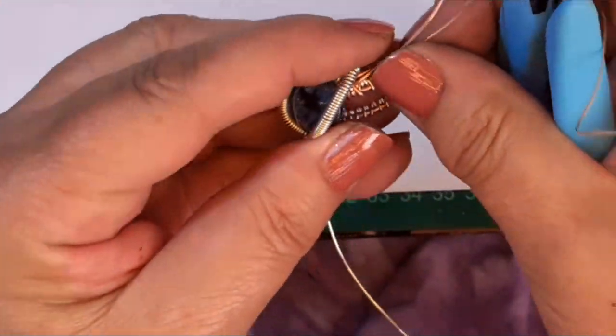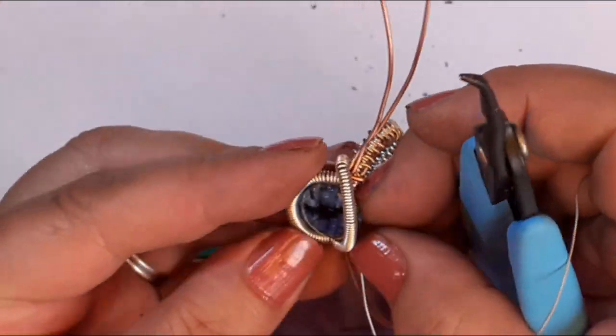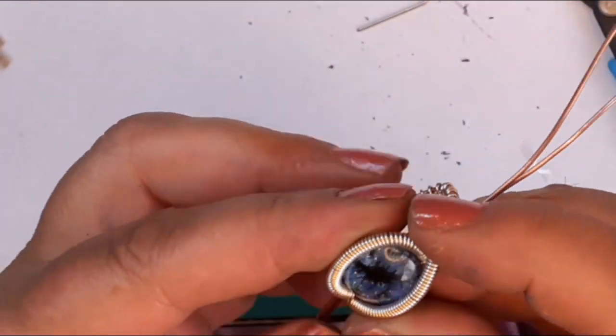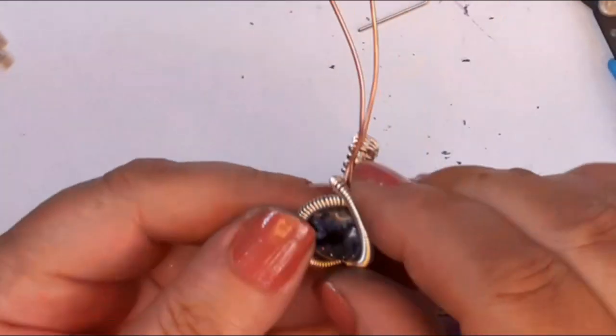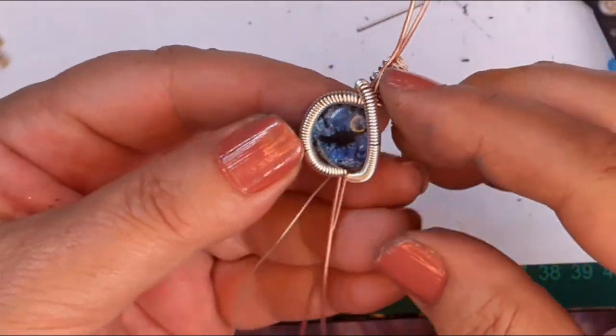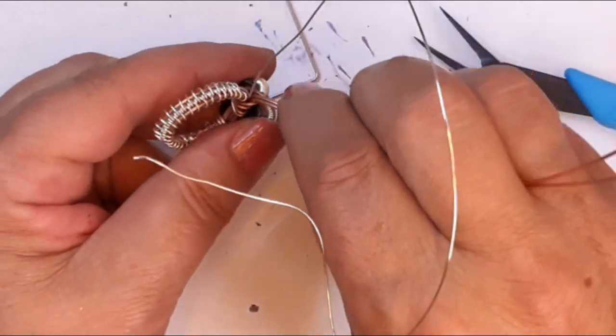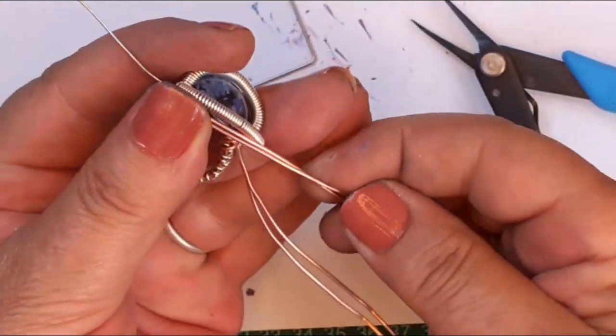Like I say, these little thin pliers are really handy and they're not too expensive. Adjust the ring and the eye so you're happy with the shape. Don't panic if the eye drops out. You can just slide it back in.